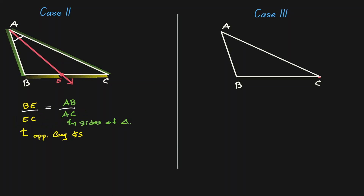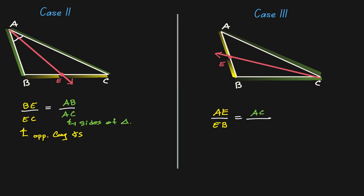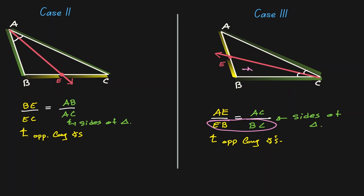Our third case is what would happen if we bisect angle C. Let's call this intersection E. Then by the triangle angle bisector theorem, we know that the ratio of AE divided by EB would be equivalent to the ratio of AC divided by BC. The first proportion is among the sides opposite of the congruent angles created by the angle bisector, and the second proportion represents the sides of our triangle. The numerators come from the same triangle on the left, and the denominators come from the same triangle on the right.